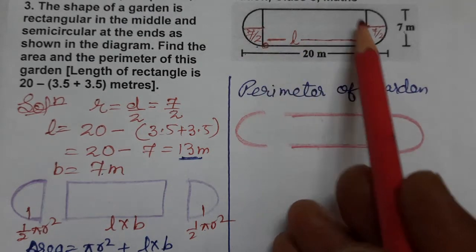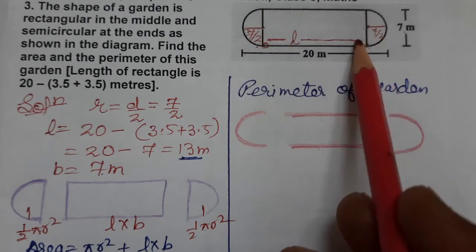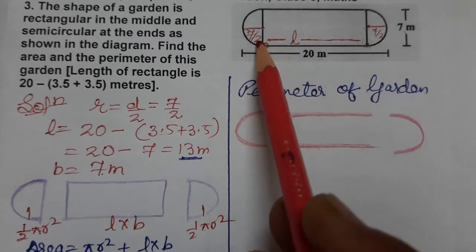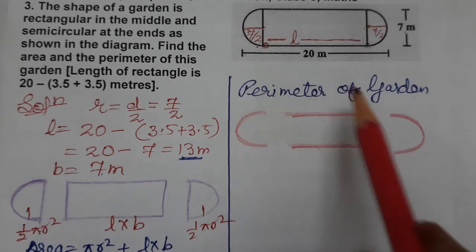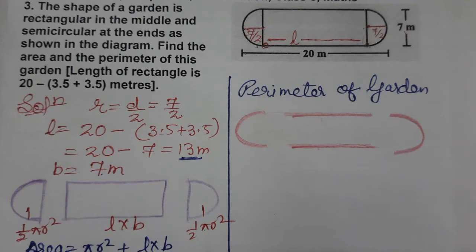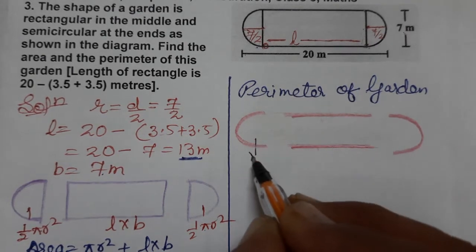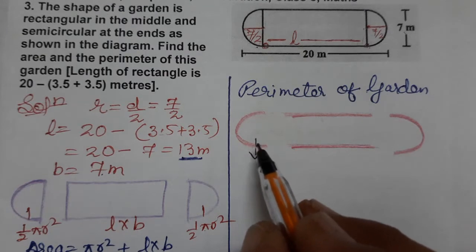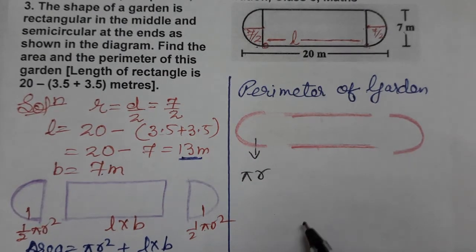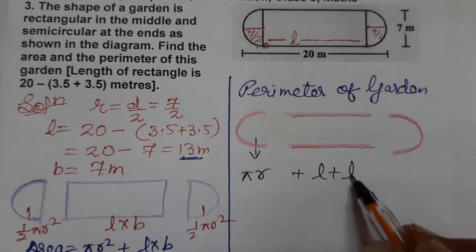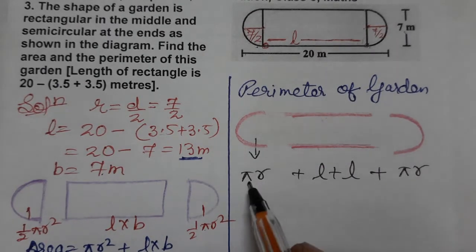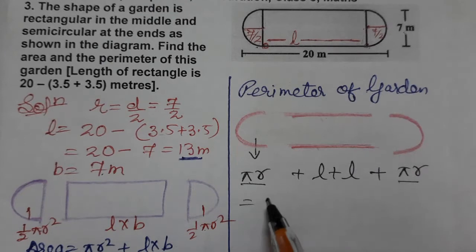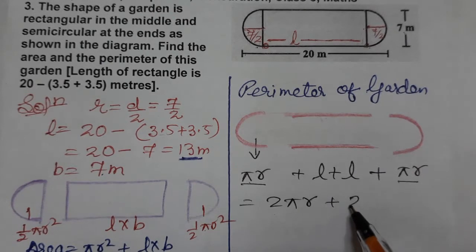Perimeter means outer boundary — we do not include the middle dividing lines. The two semicircles together give pi r plus pi r, which equals 2 pi r. The two lengths give l plus l, which equals 2l. So perimeter equals 2 pi r plus 2l.